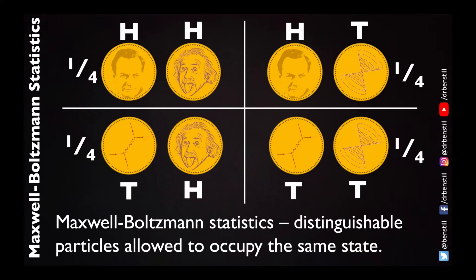That means there are four possible outcomes if we flip these two coins: heads-heads, tails-tails — where both coins are in the same state — and then two further outcomes where one coin is in the tail state while the other is in the head state, and vice versa. Because they are two different coins we can tell the difference. So Maxwell-Boltzmann statistics gives us a probability of one quarter for each of these four different states.